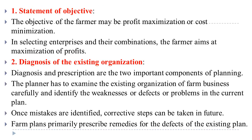Step 1 is the statement of objectives. The objective of the farm may be profit maximization or cost minimization. In selecting enterprises and their combination, the farmer aims at maximization of profit. This is the first thing to know when planning or making any budget.